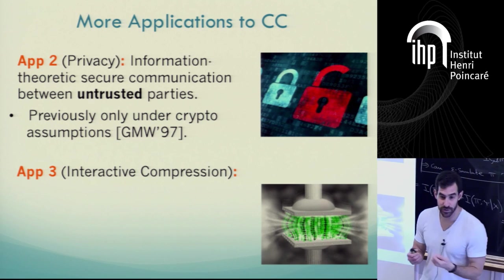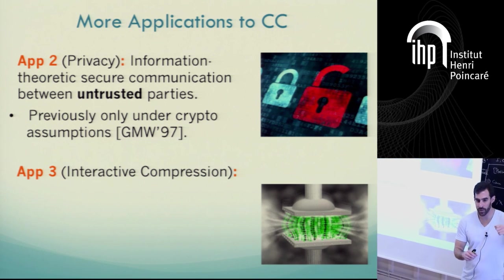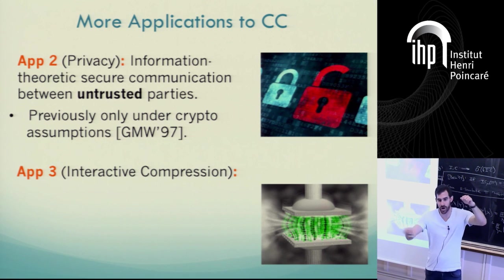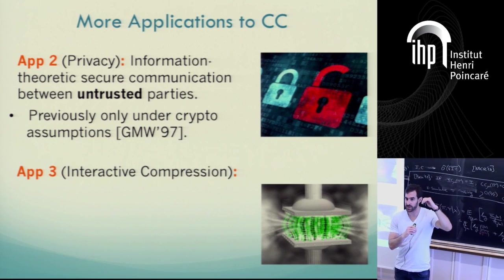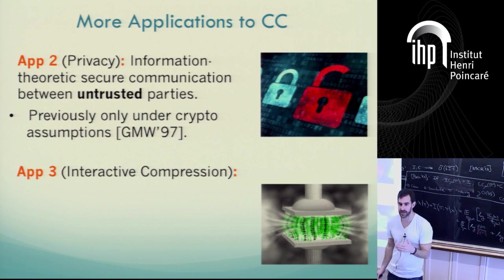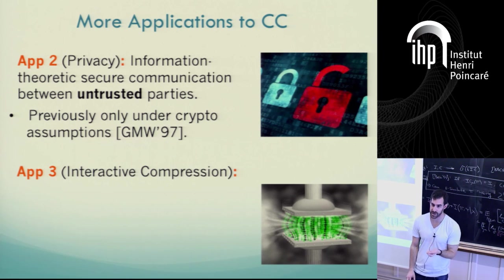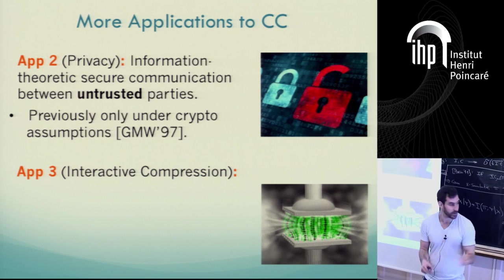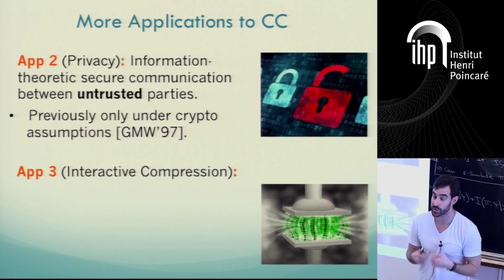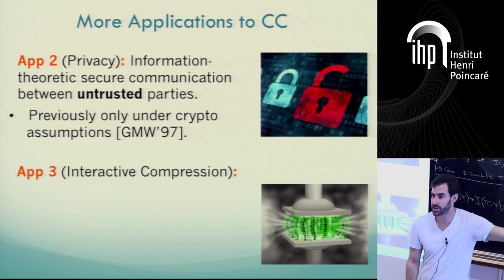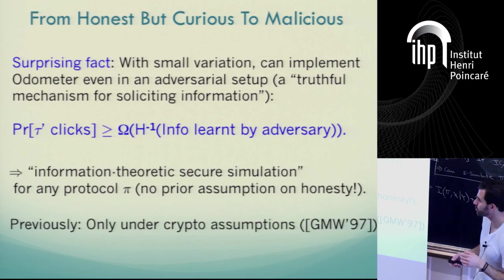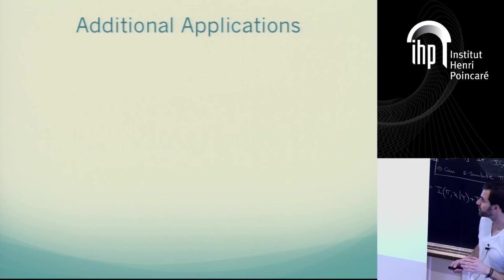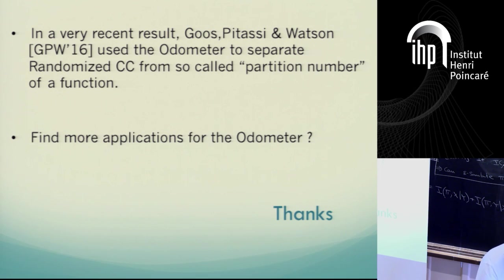The very last application is to interactive compression. What the odometer primitive allows you to do is chop up the protocol tree into chunks that each reveal roughly log C bits of information — exactly the regime I drew in the picture. The odometer essentially reduces the interactive compression problem to compressing in the regime where information is roughly logarithmic in communication. So if you make any progress in this regime, it may lead to general improved interactive compression results.